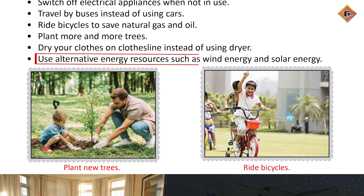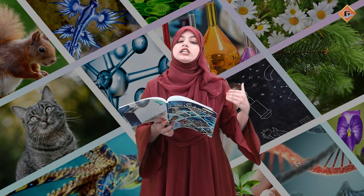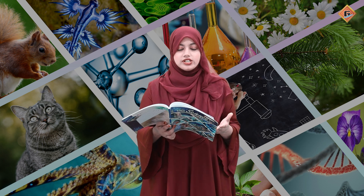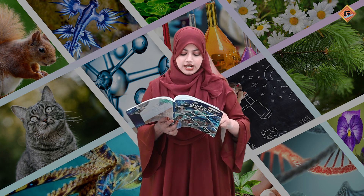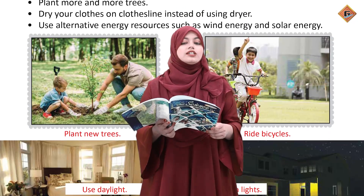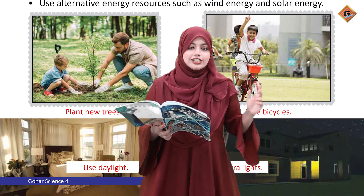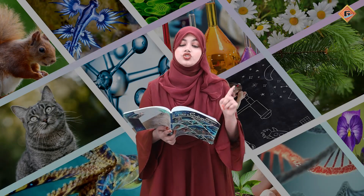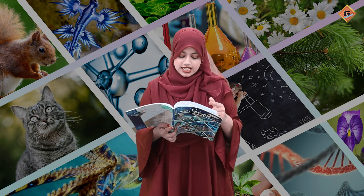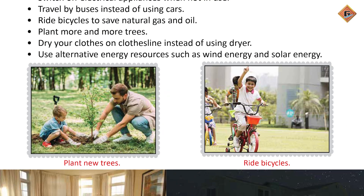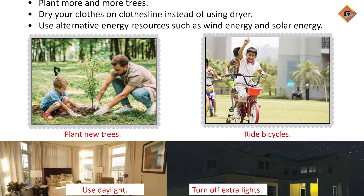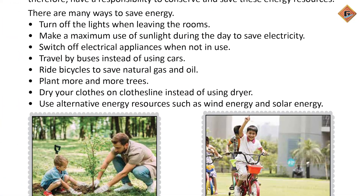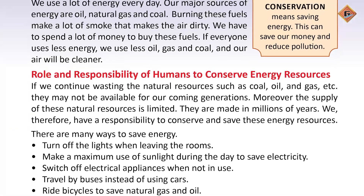Use alternative resources like wind energy and solar energy. The sunlight will not run out — today it is used and tomorrow the sun will rise again and energy will come again. But fossil fuels will run out over time. So use wind energy, flowing water energy, and sun energy as much as possible. This is how you can use energy very carefully, especially resources obtained from fossil fuels.